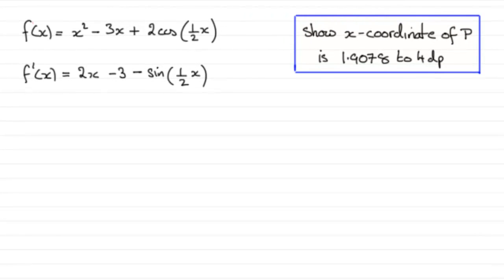Now, for this last part, we're told that by choosing a suitable interval, we've got to show that the x-coordinate of P is 1.9078 to 4 decimal places.